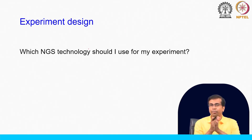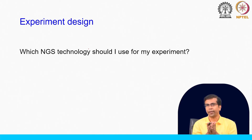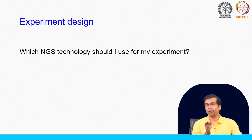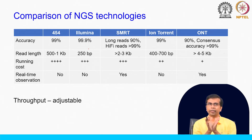The last part is experiment design. When starting a project, a key question is which NGS technology to use. Here is an overview comparison of different NGS technologies discussed: 454, Illumina, SMRT, Ion Torrent, and ONT. Accuracy ranges from about 90 percent for long reads to 99.9 percent for Illumina. Read lengths range from 250 bp for Illumina, 500 bp to 1 kb for 454, 400–700 bp for Ion Torrent, above 2–3 kb for SMRT, and more than 45 kb for ONT.